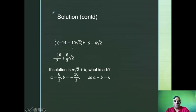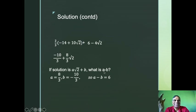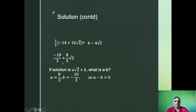The area is in the form a√2 + b, so a = 8/3 and b = −10/3. Therefore a − b = 8/3 − (−10/3) = 18/3 = 6. That is our answer.